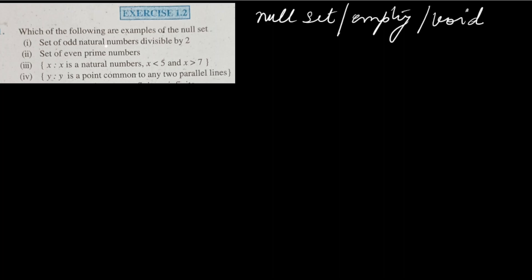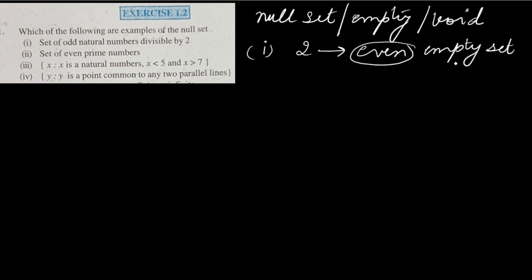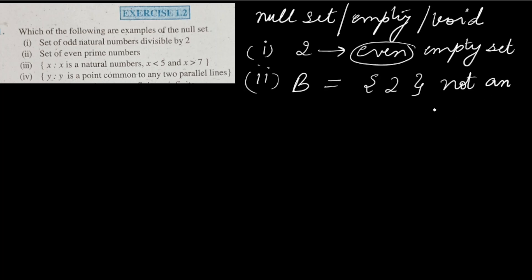Question 1: Which of the following sets are examples of the null set? The first set is the set of odd numbers divisible by 2. All numbers divisible by 2 are even, so there is no odd number divisible by 2. This set has no element, so it is the empty set. The second set is the set of even prime numbers. We know 2 is an even prime number, so this set has one element and is not an empty set.